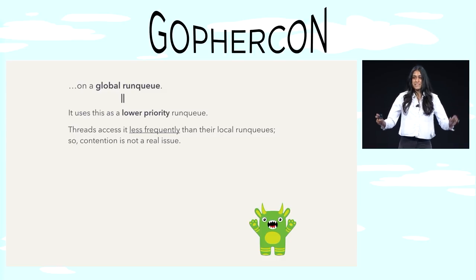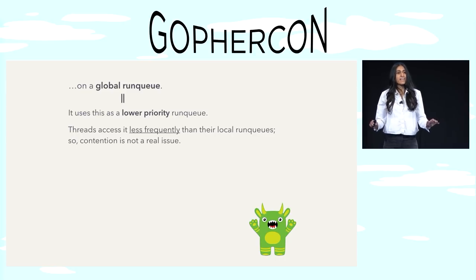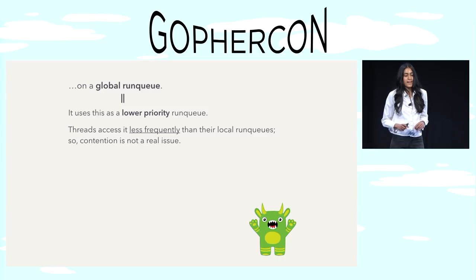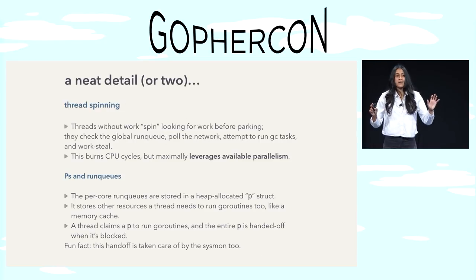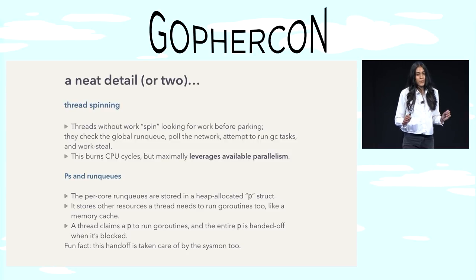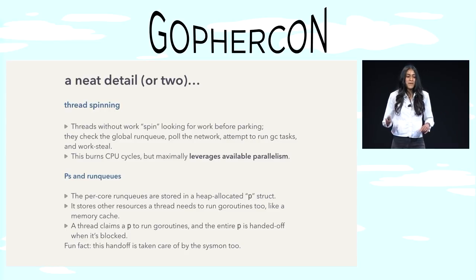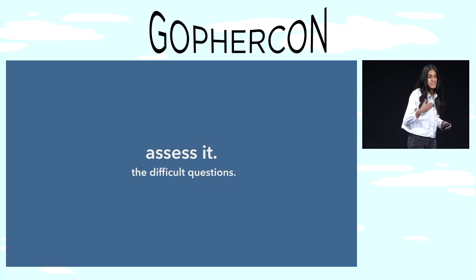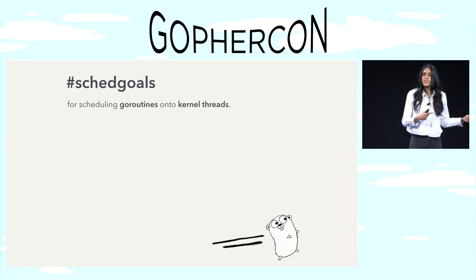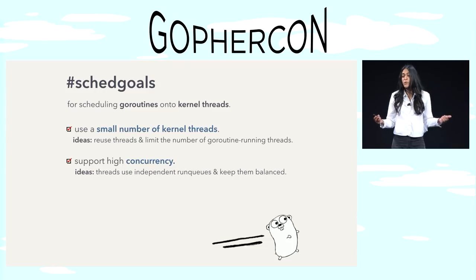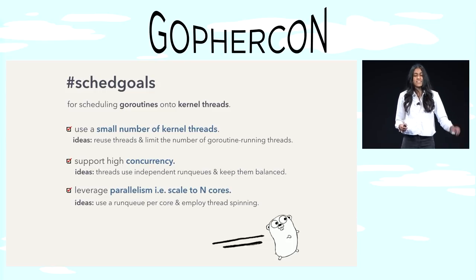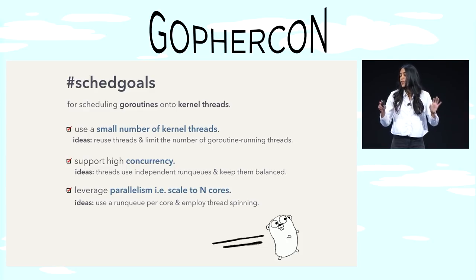No more surprises, I promise. With that, we now have a full understanding of the main ideas — both big and sneaky — behind the Go scheduler. I would love to talk about neat implementation details, but in the interest of time we won't today. Rest assured, you have all the tools you need to dive into the source yourself — it's very accessible, so go do it. Now let's step back and assess the scheduler. How did we do with our goals? A plus. We use a small number of kernel threads. We can support high concurrency. And we can leverage parallelism — we scale to N cores. This falls out of those three ideas we discussed.